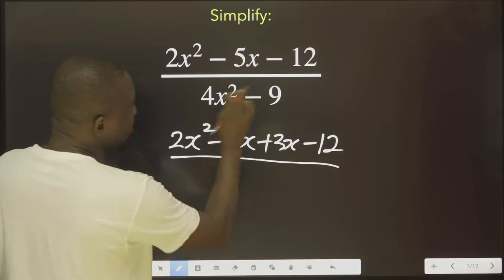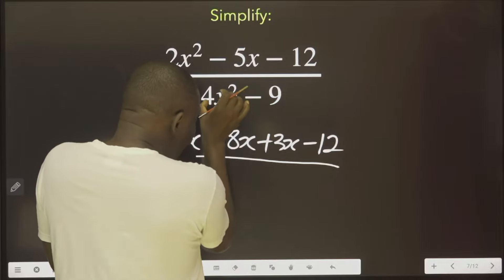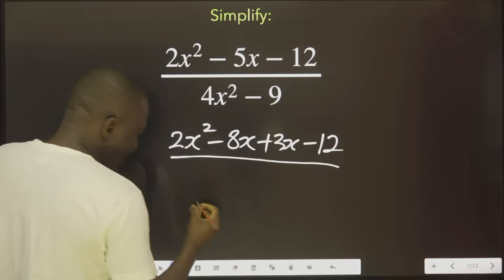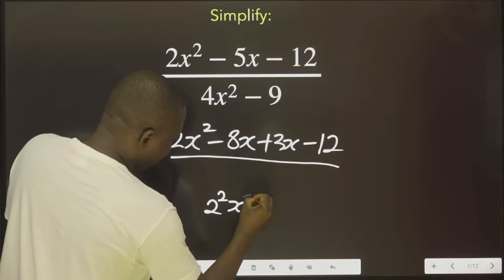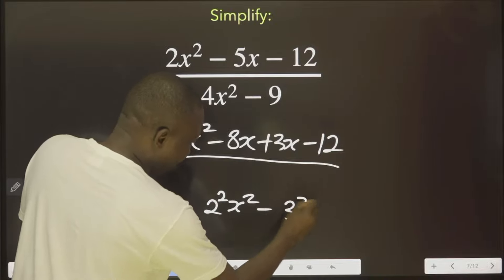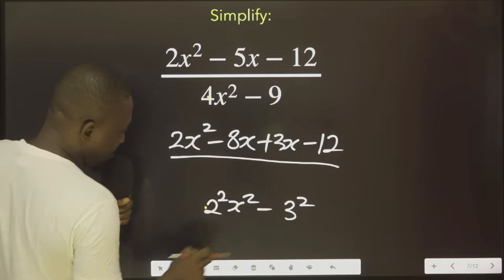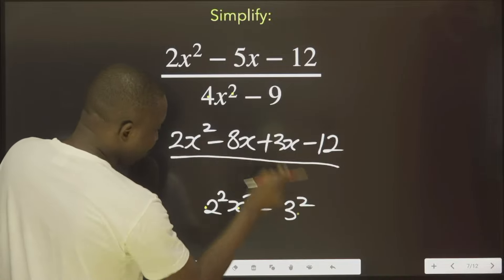We come for the denominator. What is common between these two? If you investigate this, it's 2 raised to the power 2, x raised to the power 2 minus 3 raised to the power 2. So, this will give us 4x squared. This will give us 9.